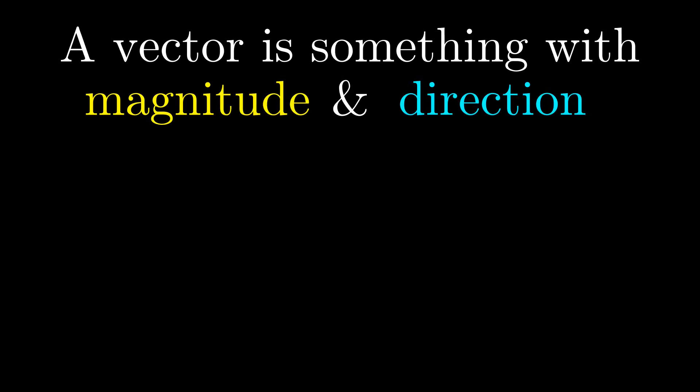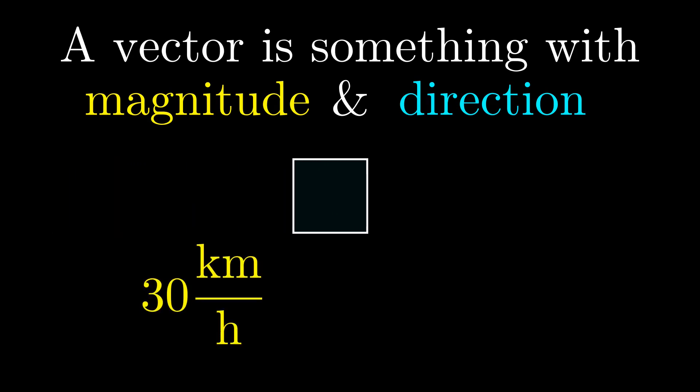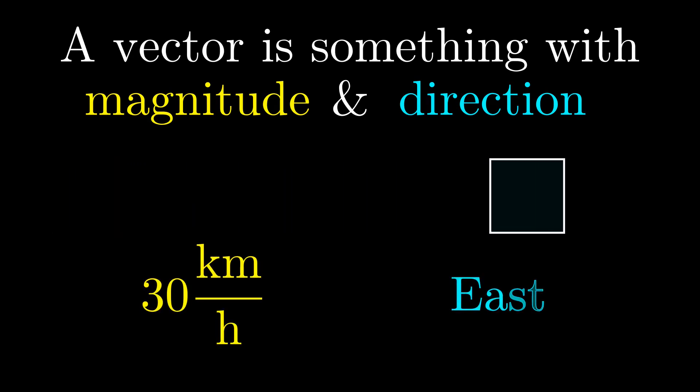As an example, take velocity. You could be traveling at 30 kilometers per hour, the magnitude, and be doing so eastwards, the direction.